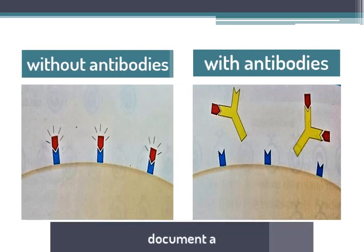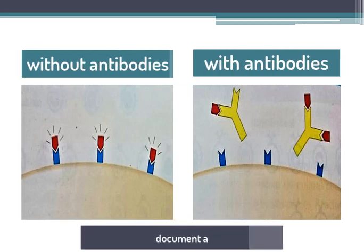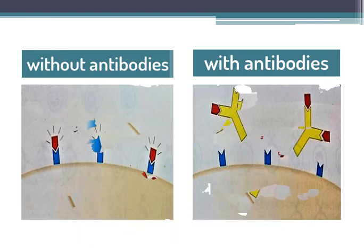Refer to document A in your book to notice the difference in the action of the toxin shown in red on a target cell in the absence and presence of antibodies.